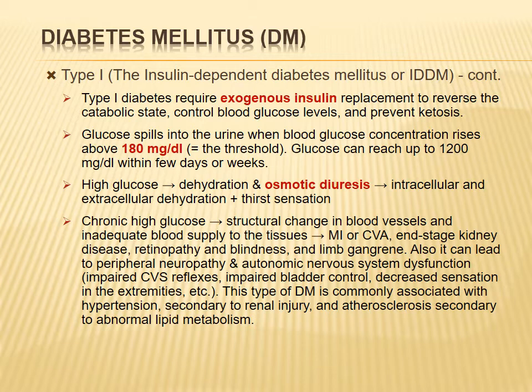In severely insulin-deficient patients, blood glucose can reach up to 1200 mg/dL within a few days of missing insulin doses. This often happens due to negligence — the patient runs out of insulin and delays purchasing more, and within a day or two complications begin to appear.